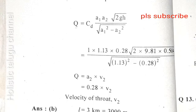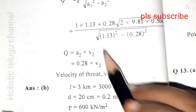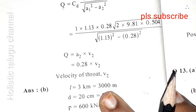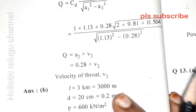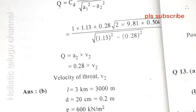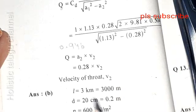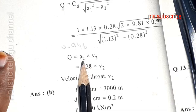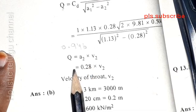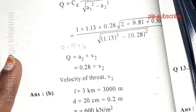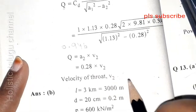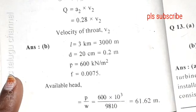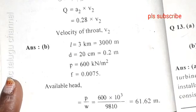Q equals Cd A1 A2 into square root of 2gH divided by square root of A1 squared minus A2 squared. Calculate the value. Here we are doing that calculation. Calculate Q equals 0.946. Velocity V2 equals Q by A2 equals 3.378.